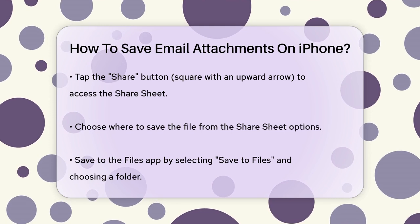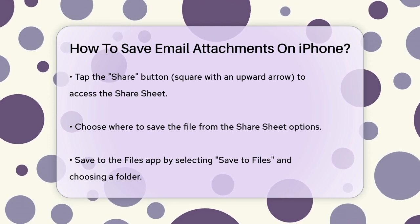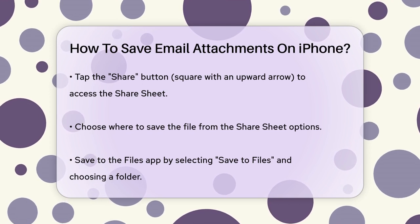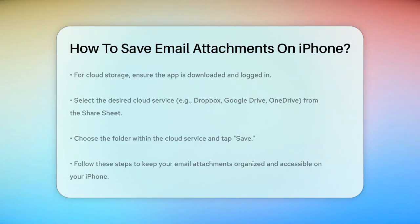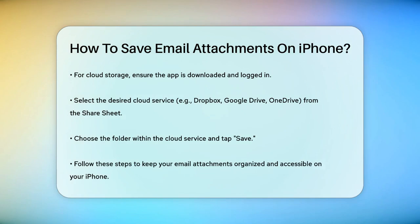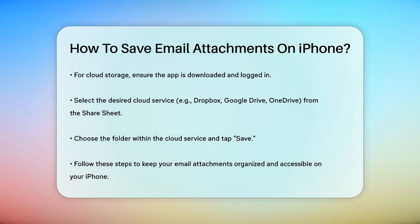If you're using a cloud storage service, make sure you have the app downloaded and logged in. Then select the service from the Share Sheet and choose the folder where you want to save the file. For example, if you want to save to Dropbox, select Save to Dropbox, choose the folder, and then tap Save. The same process applies to Google Drive and OneDrive, with slight variations depending on the service.